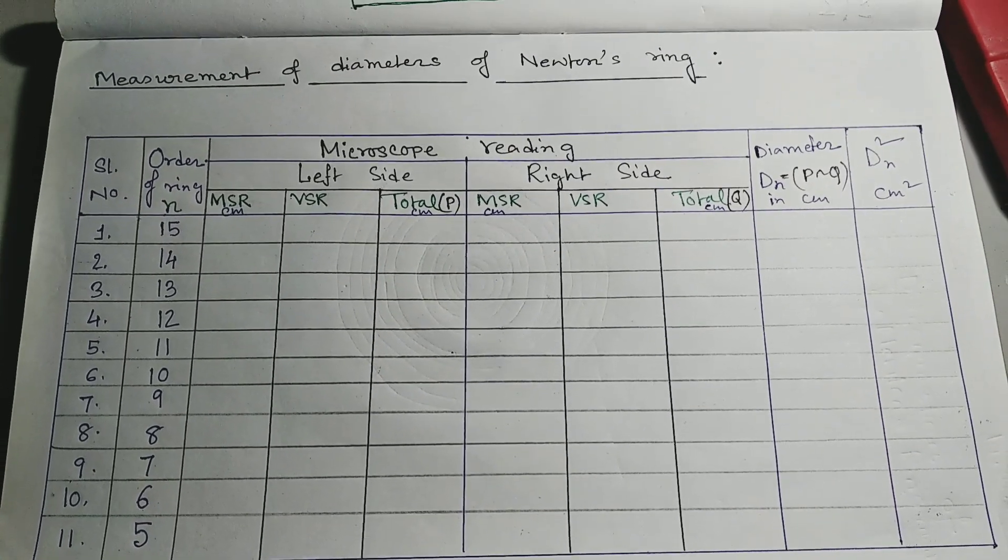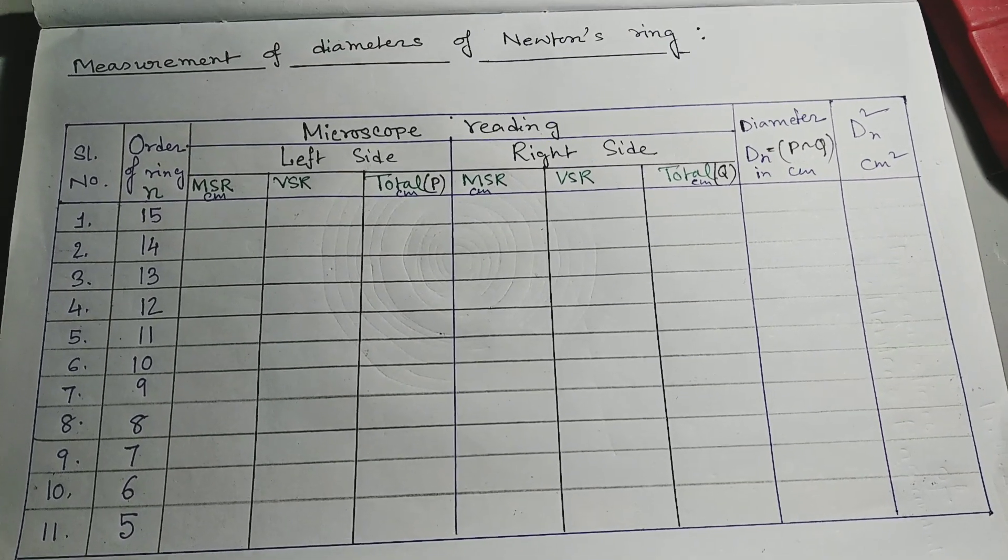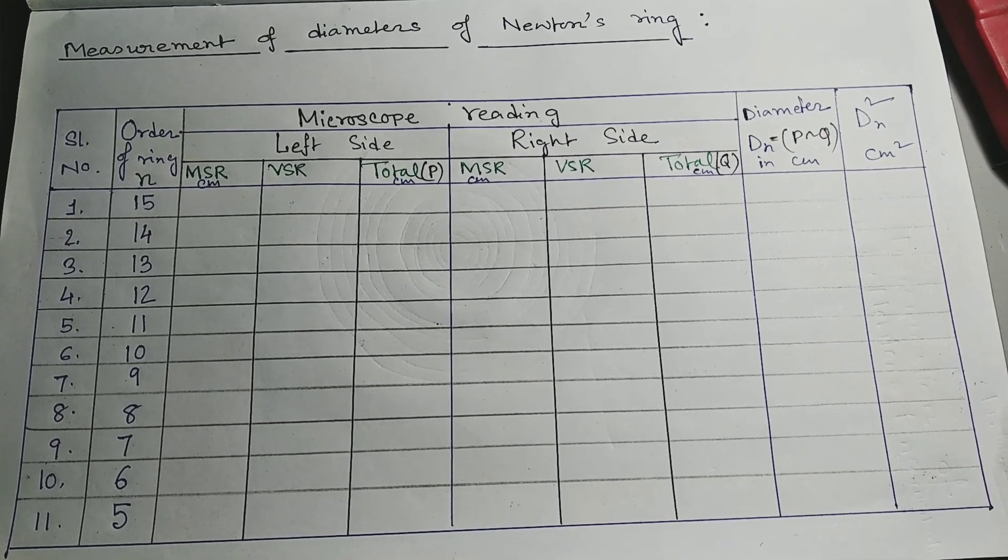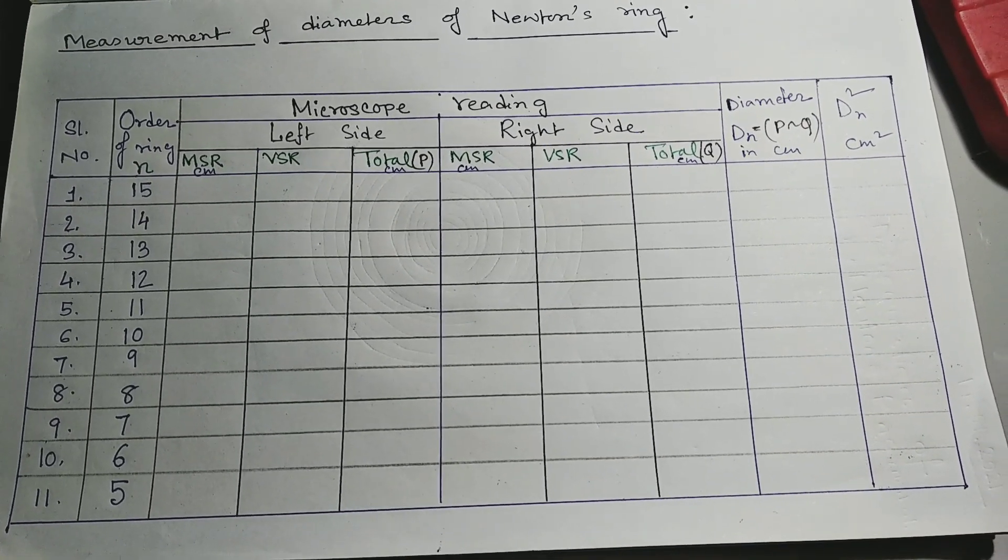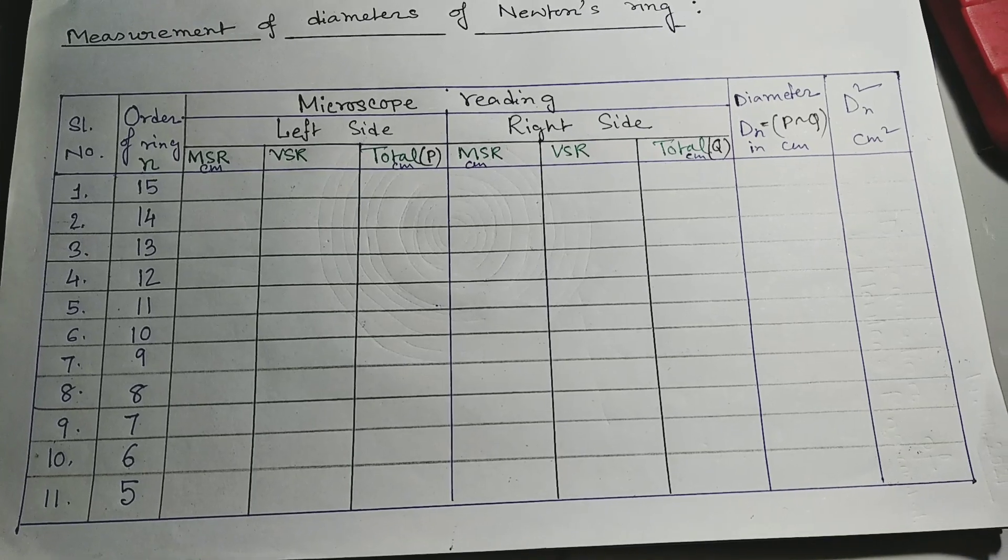Next if we proceed towards working table, observation table, we are going to measure the diameter of the dark circular fringes.